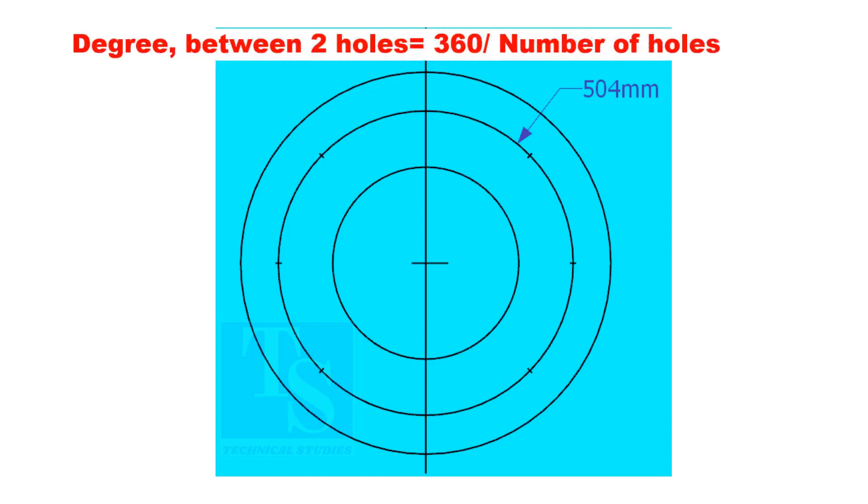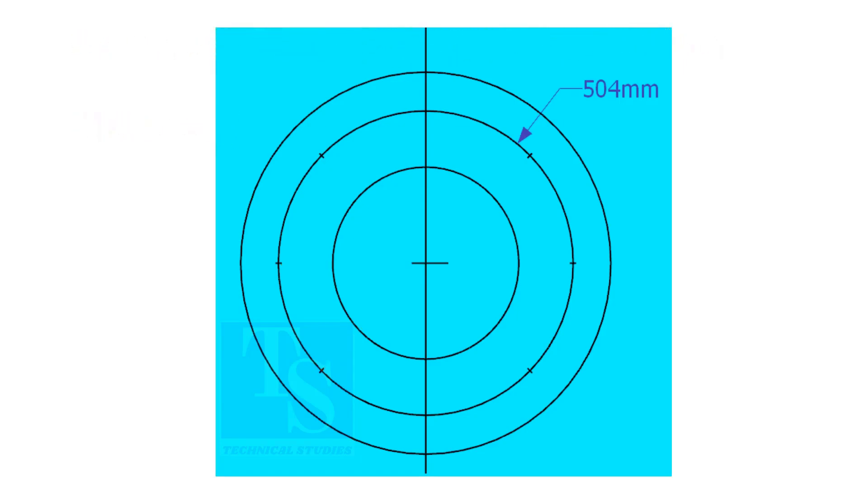If you divide 360 by the number of holes, you will get the angle between two holes. Cord length equals sine 45 divided by 2 multiplied by PCD.